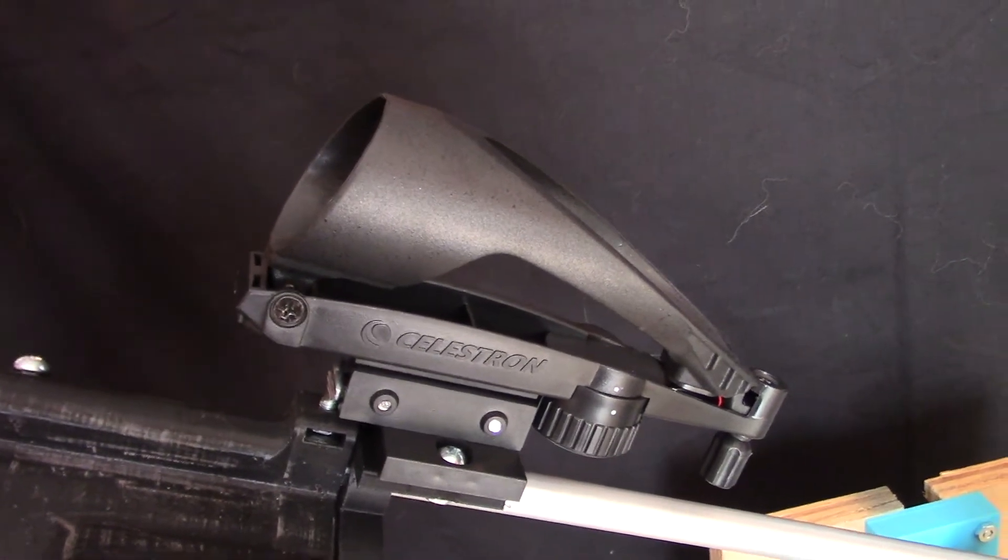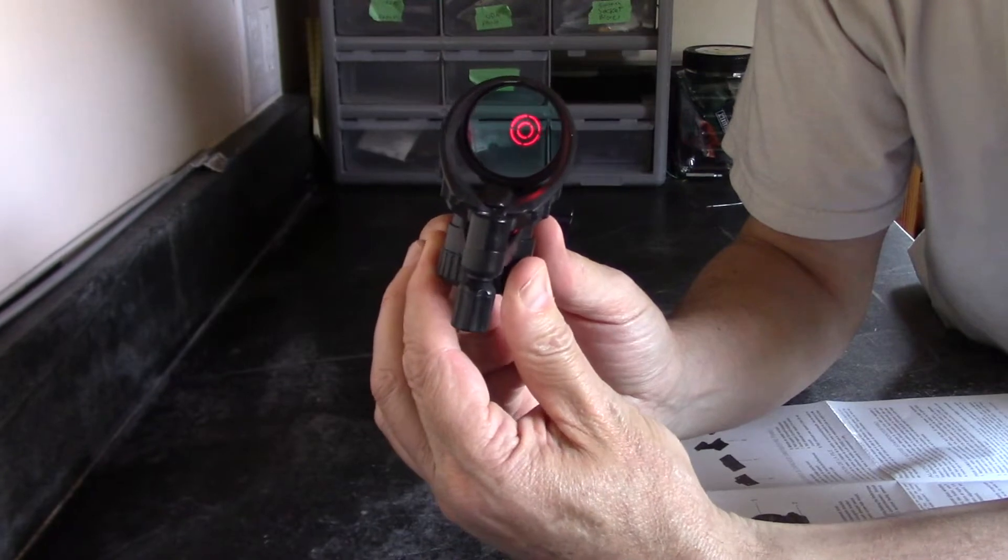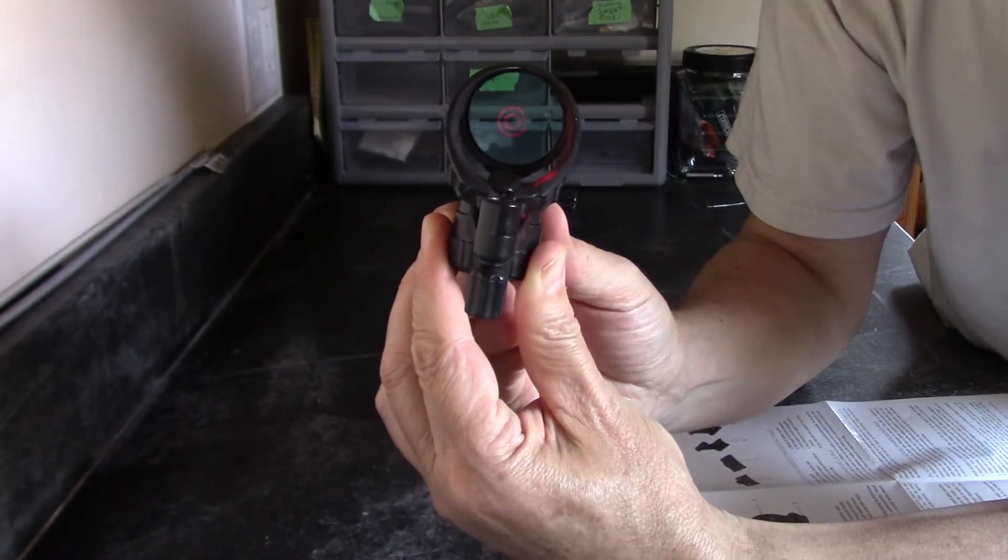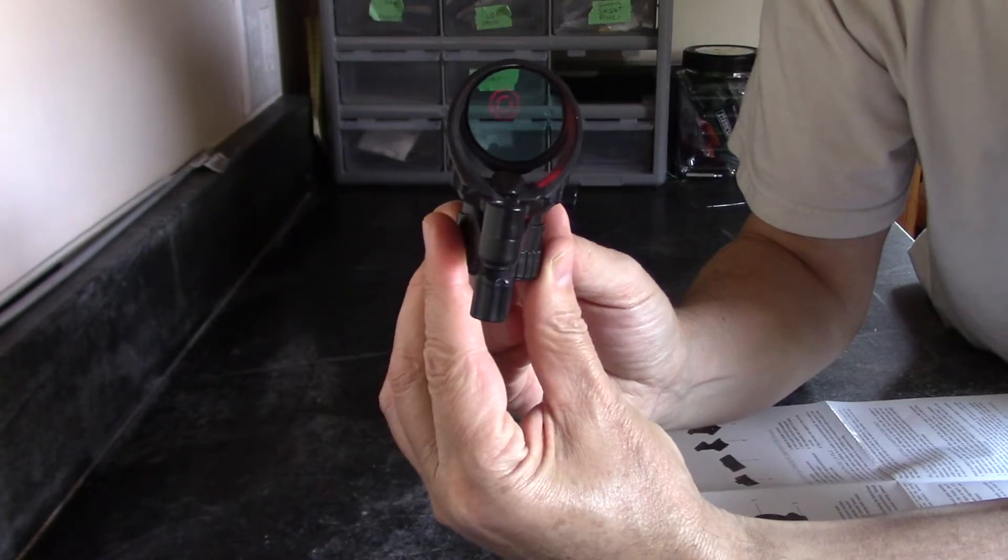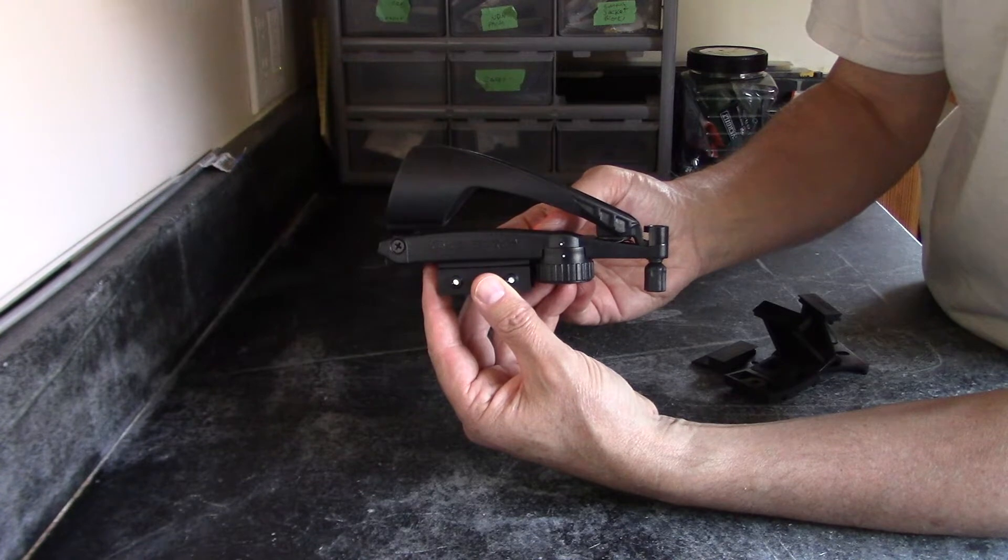And this Finder Scope is really pretty neat. It projects a laser image on the glass in front with two circles. And then you can adjust it right and left and up and down, and you can precisely align your telescope to what you see in the eyepiece.